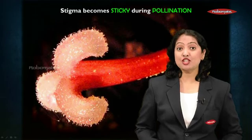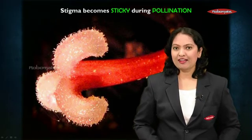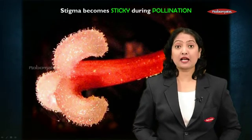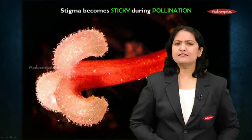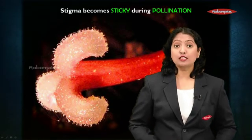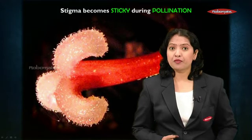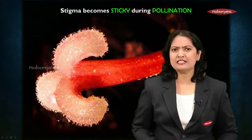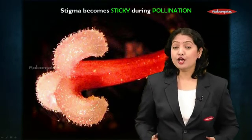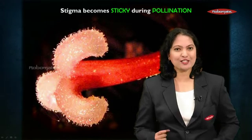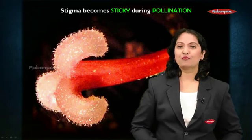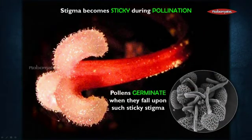During pollination, just as there are changes happening in the anther, there are also some changes that take place in the carpel. The stigma becomes sticky during pollination; the cells of the stigma secrete a sugary solution because of which the stigma becomes sticky. Pollen grains are very light, so if they fall off the stigma they are of no use to the flower. The stigma becomes sticky so that the pollen grains can settle there efficiently.